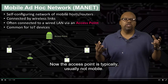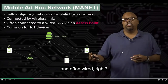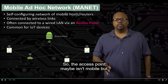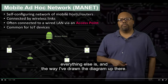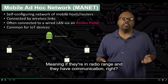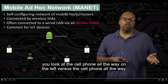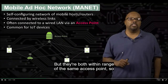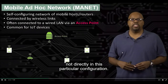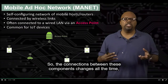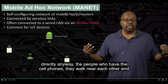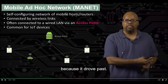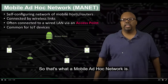The access point is typically not mobile — it might be, but commonly it's not mobile and often wired. It has wireless connections to all the IoT devices but might have a wired connection to the main internet. There are lines between two nodes if they can communicate directly, meaning they're in radio range. For example, the cell phone on the far left and the one on the far right don't have a direct edge because they may be out of range, but they can communicate through the access point. The connections between components change all the time because these things are moving.